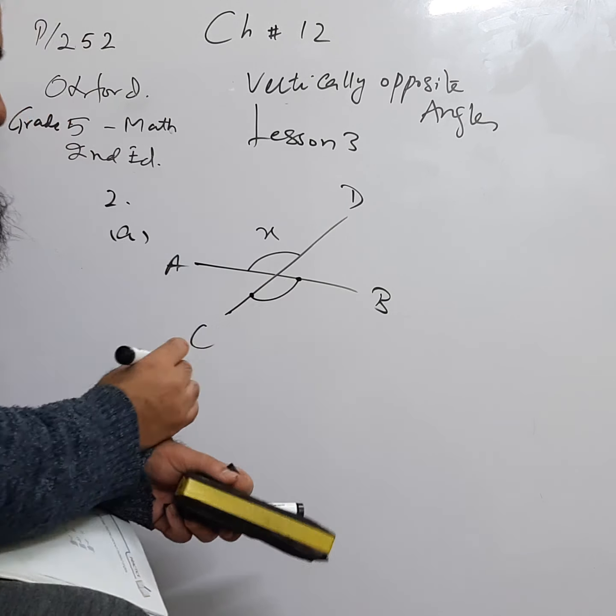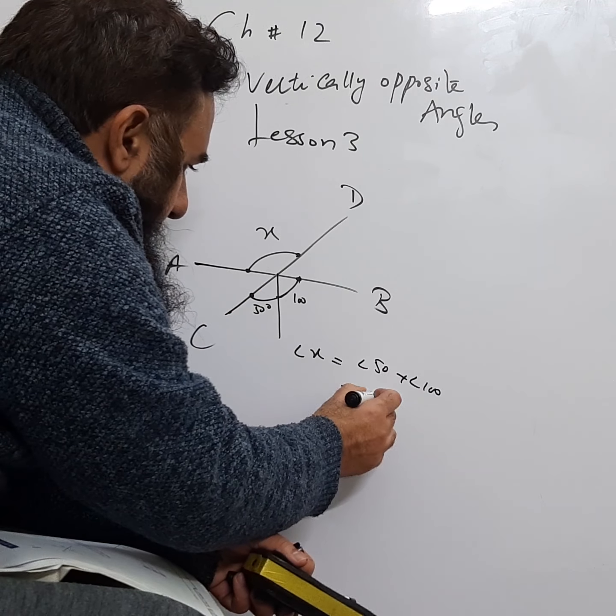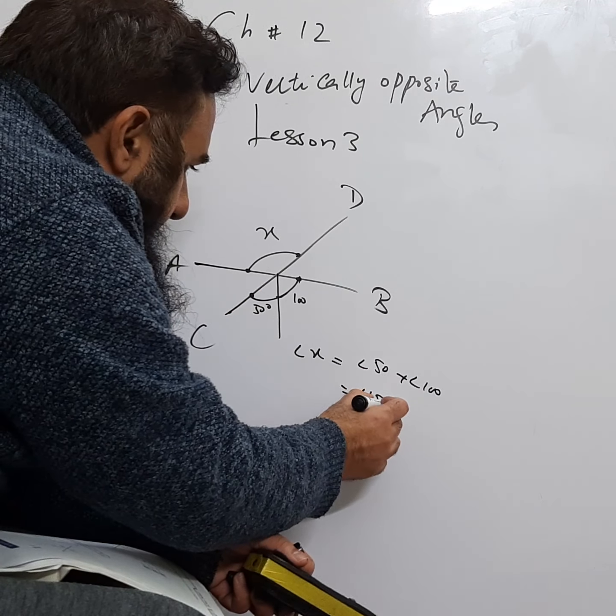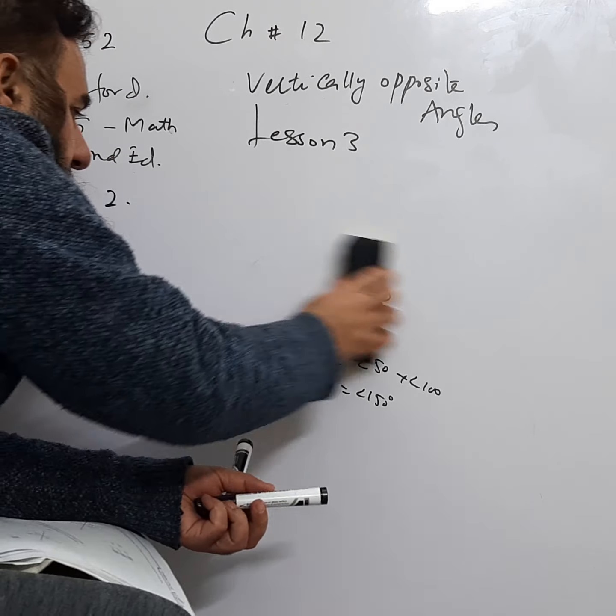These are equal — this is X and this is its vertically opposite angle. They have split this angle into two parts: one part is equal to 50 and the other part is equal to 100. So we can find angle X: X equals 50 plus 100, which is 150. Because these are vertically opposite, X equals 150. That is the answer for part A.